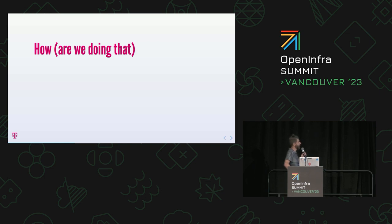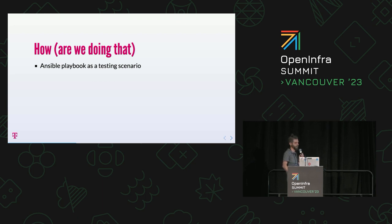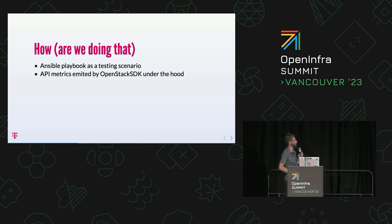Now let's have a look at how we are doing that. The very basic idea was to take an Ansible playbook as a testing scenario, because Ansible is easy. Everybody can understand Ansible - you can read it, every single op would be able to understand it, and what's even better is that everyone would be able to reproduce it on their own laptop. API metrics are emitted by OpenStack SDK under the hood. This is something not known by everybody, but Ansible relies on OpenStack SDK, and OpenStack SDK is capable of emitting metrics for every single API call that is made.